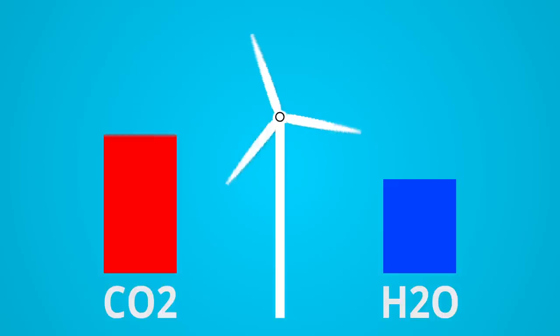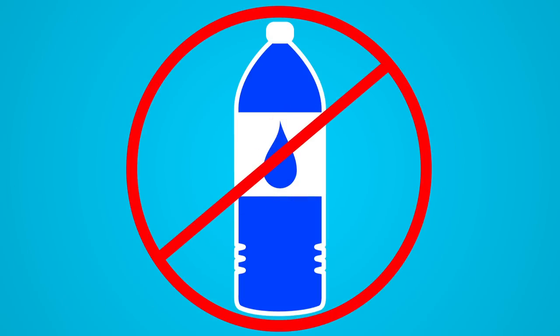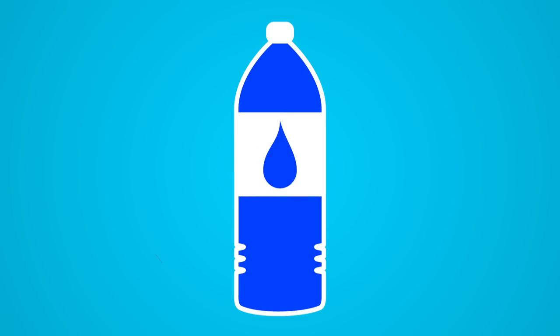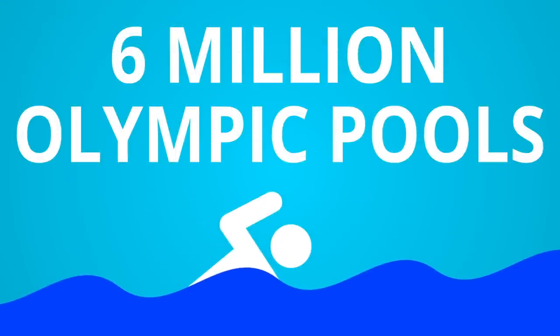Wind energy not only cuts down on CO2, it also saves H2O. Wind energy doesn't use water during production, which will save an estimated 30 trillion bottles of water in the US by 2030, or enough to fill about 6 million Olympic-sized swimming pools.